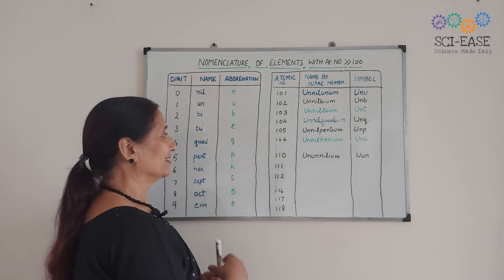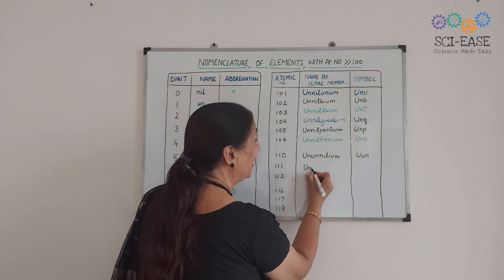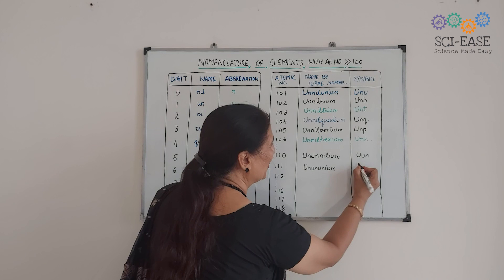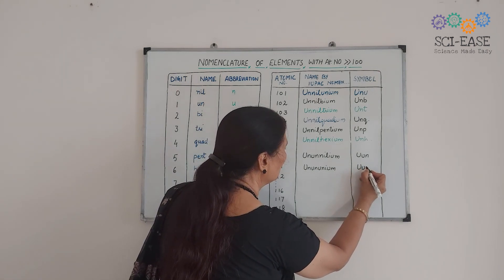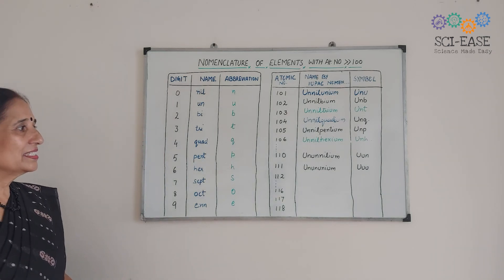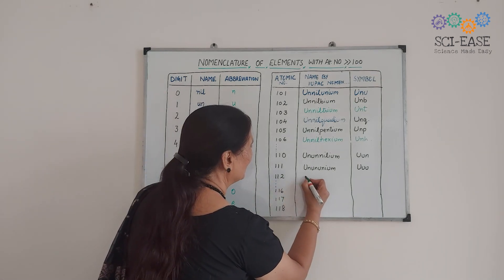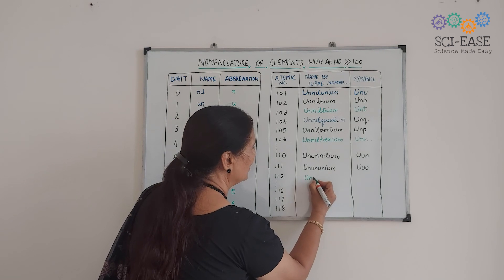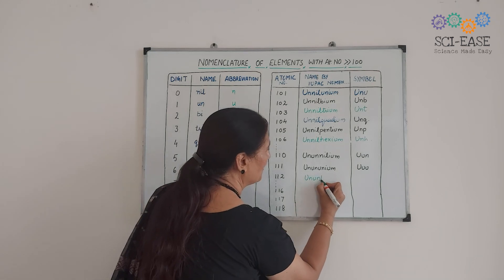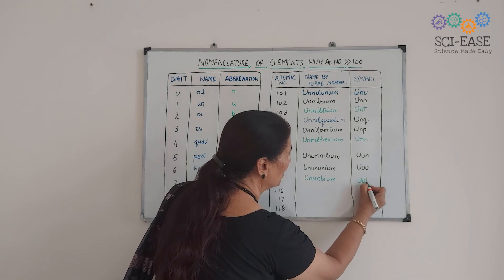For element 111: digits are 1, 1, 1 — 'un', 'un', 'un', giving 'Unununium'. Its symbol is U, u, u — 'Uuu'. For element 112: digits are 1, 1, 2 — 'un', 'un', 'bi', giving 'Ununbium'. Its symbol is U, u, b — 'Uub'.